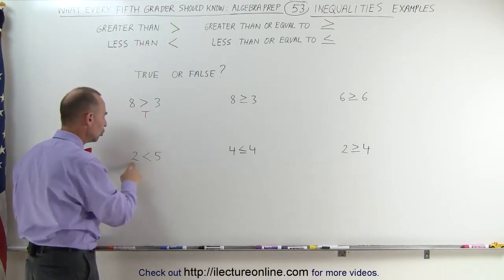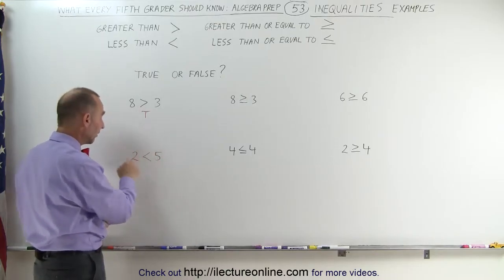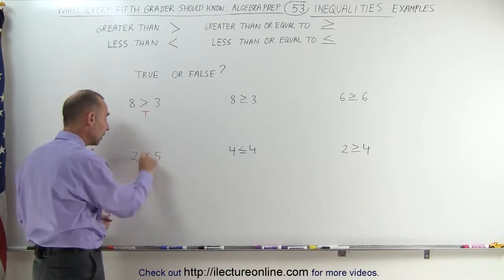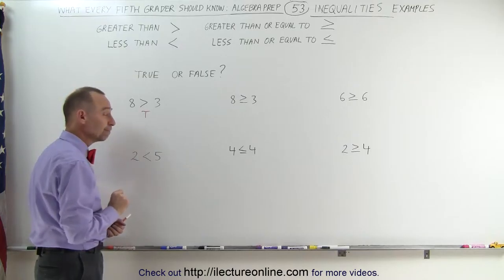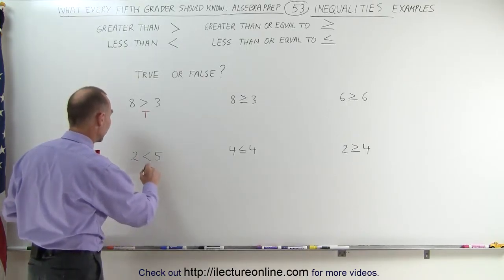How about is 2 smaller than or less than 5? When we see the symbol like that, the pointy side should be smaller than the open side on this side. 2 is smaller than 5, 2 is less than 5, so therefore this is a true statement.